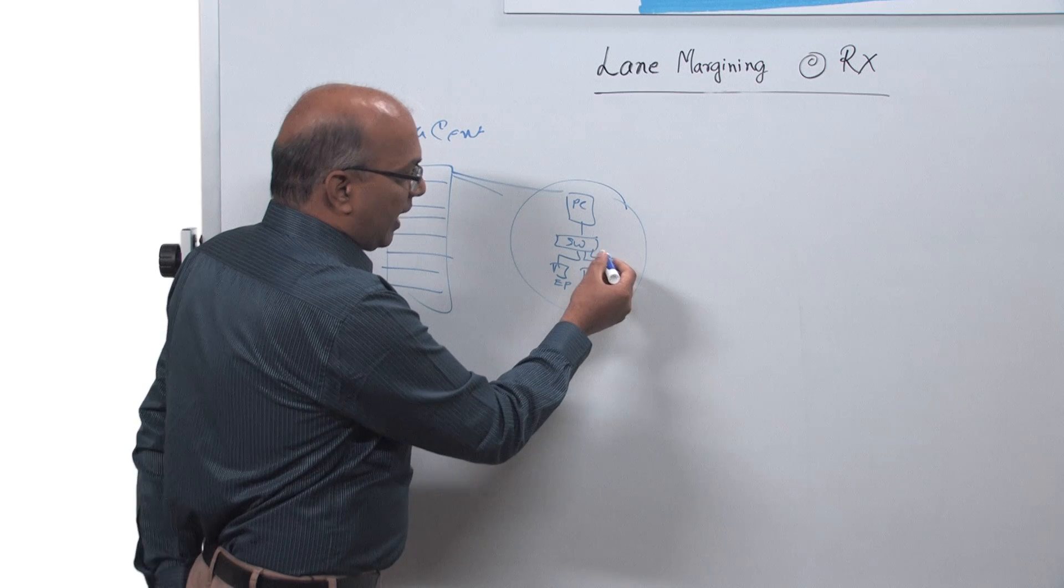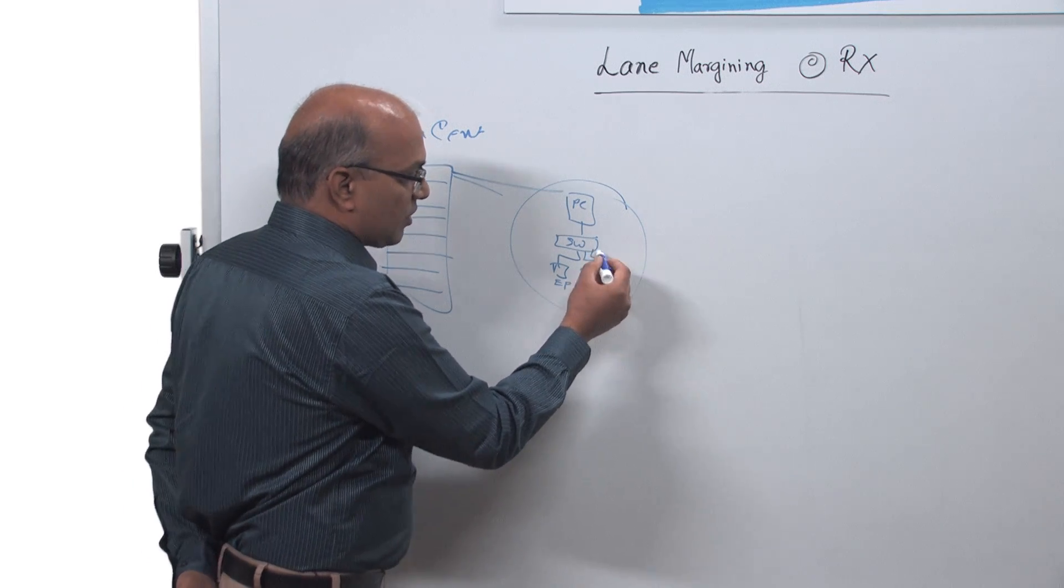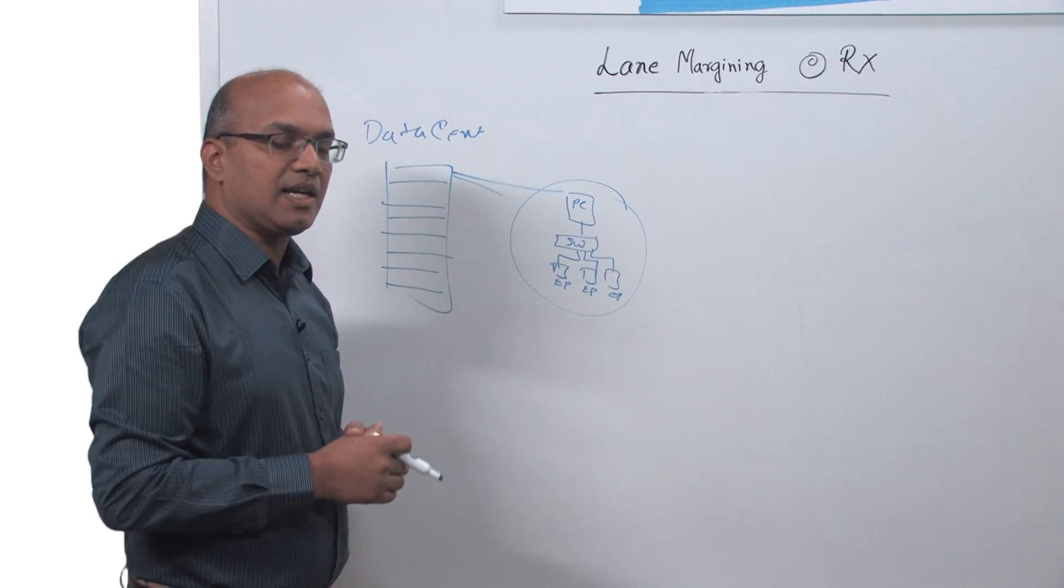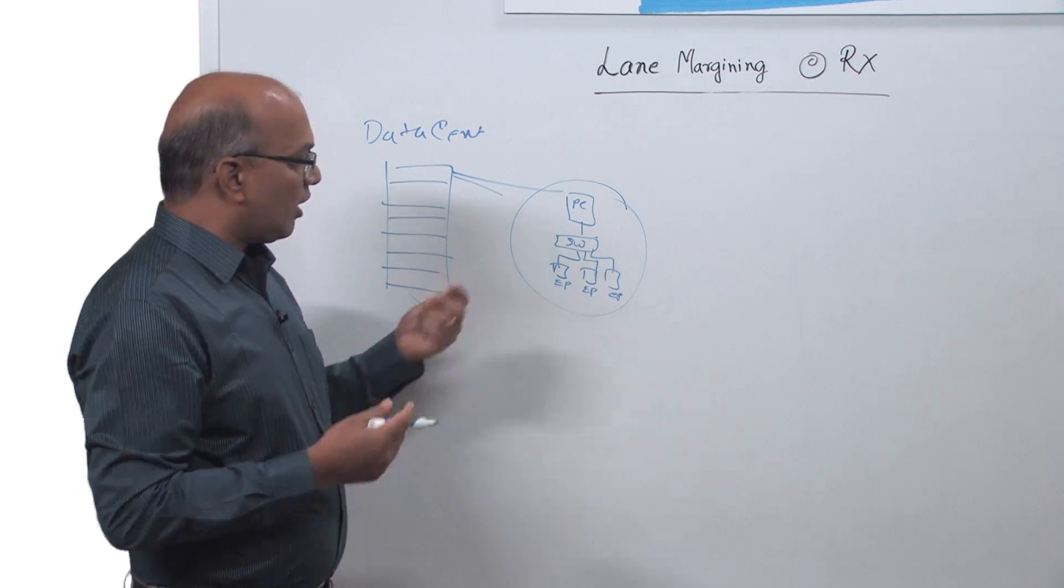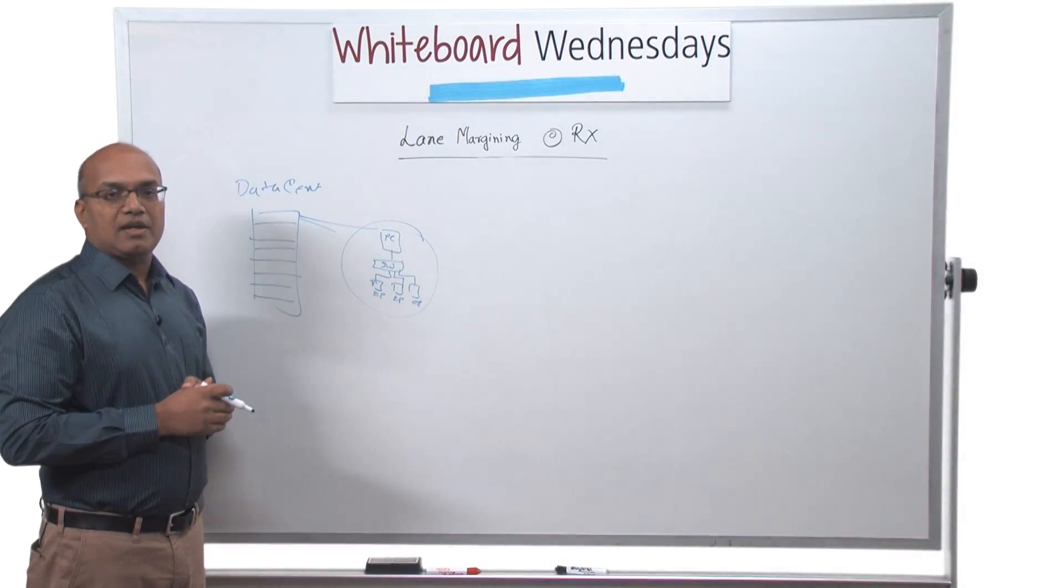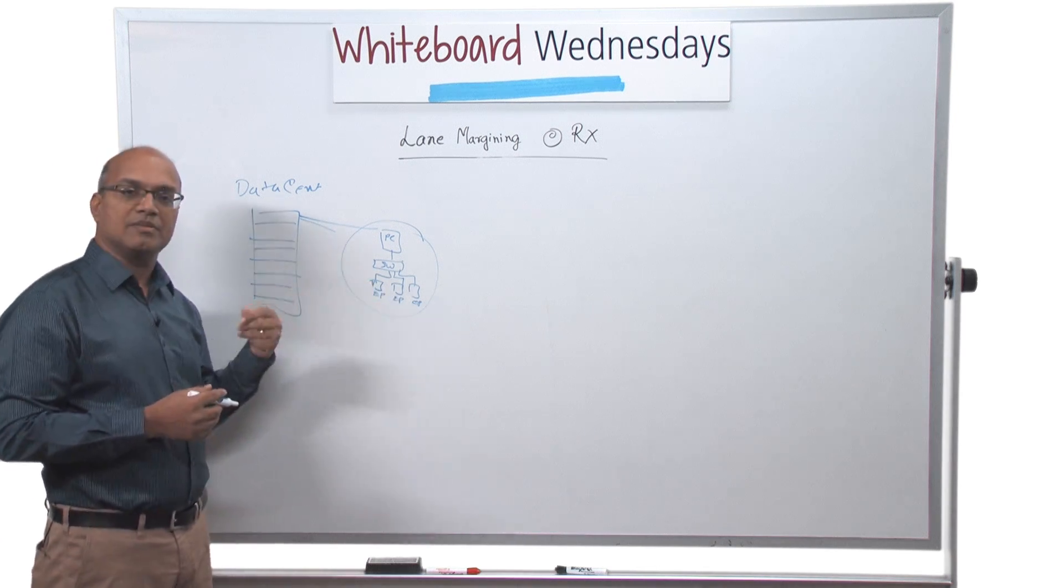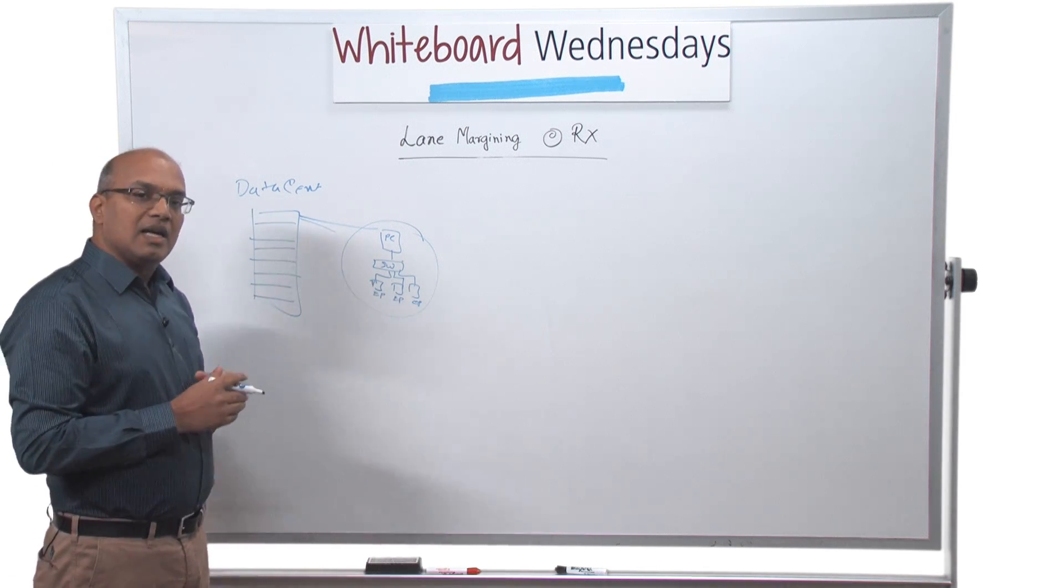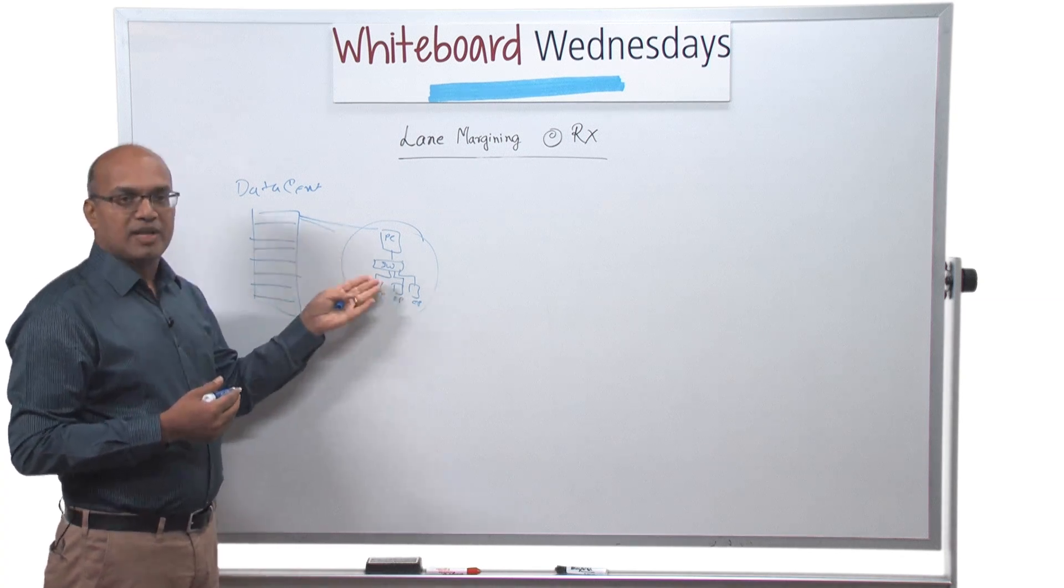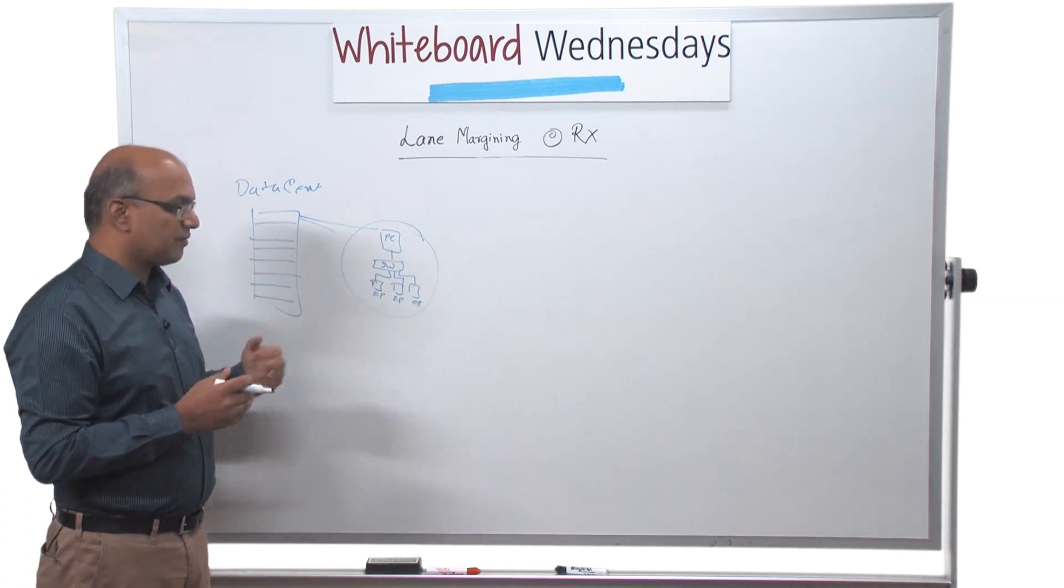Let's look at one of the links. This is a link operating at, let's say, 16 gigabits per second. The signal integrity for this link is very important. There is crosstalk that can happen, reflections, and jitter that can happen on the link which will affect the performance.